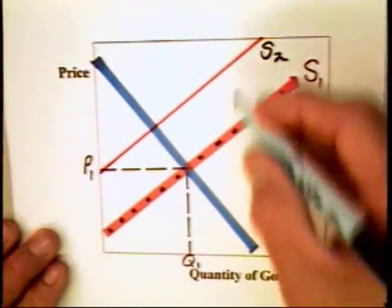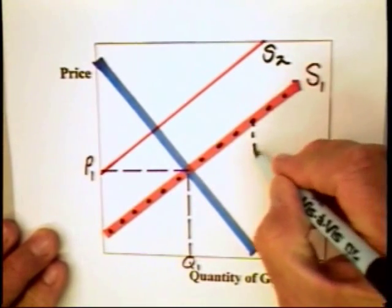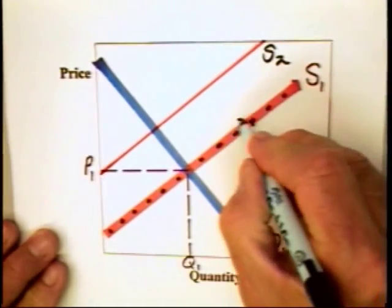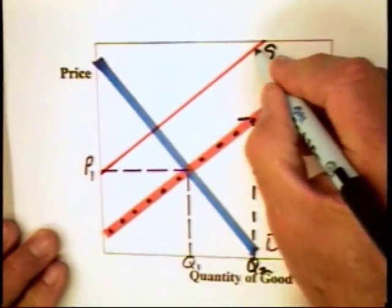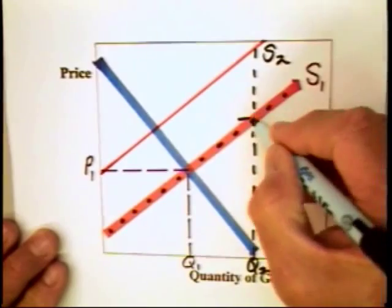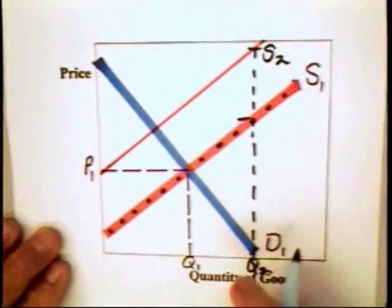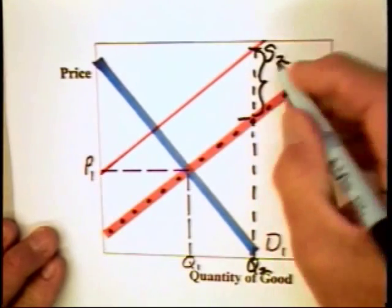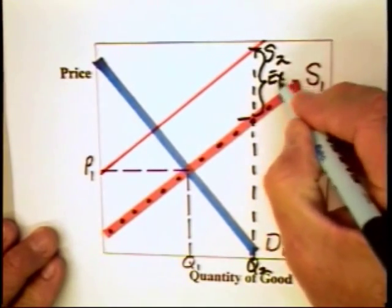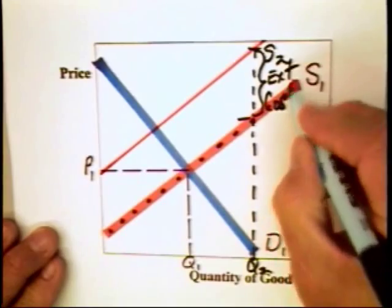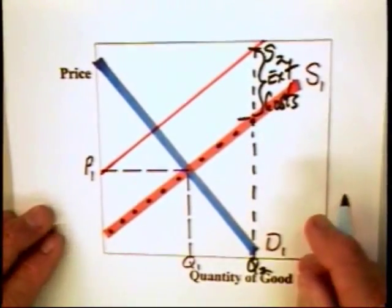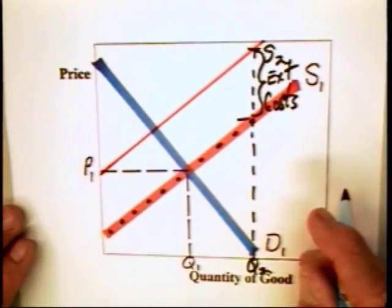That is to say, we have costs that are incurred by the producers for quantity Q2 equal to this area here. But then we have some pollution costs that is equal to this vertical distance here. This cost, which is defined in economics as external costs, are not captured by the supply curve. Hence, there can be an inefficiency in production.